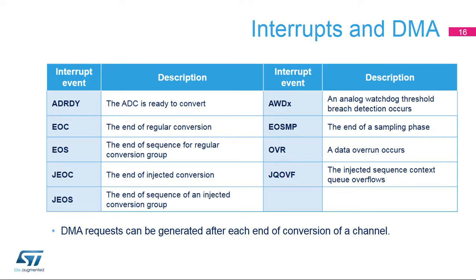Each ADC can generate nine different interrupts: ADC ready, end of conversion, end of sequence, end of injected conversion, end of injected sequence, analog watchdog, end of sampling, data overrun, and the overflow of the injected sequence context queue.